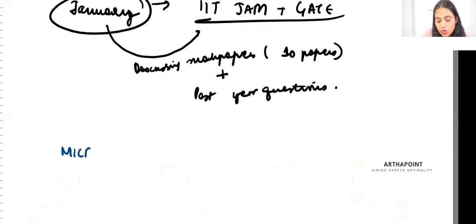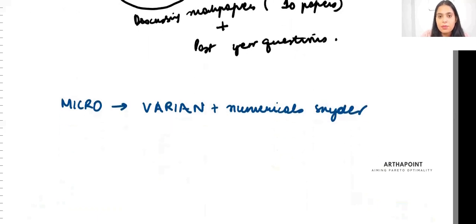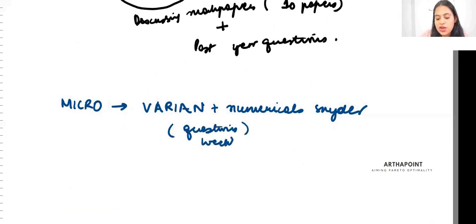For micro, my favorite book is Varian followed by numericals from Snyder. If you have taken my classes, you can just go ahead and do all the tests that I give you, weekly tests. Those have to be done.